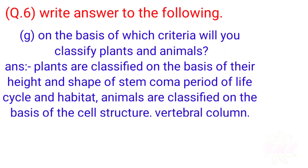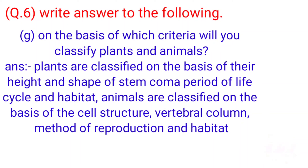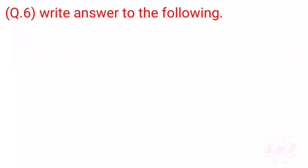G: On the basis of which criteria will you classify plants and animals? Answer: Plants are classified on the basis of their height, shape of stems, period of life cycle, and habitat. Animals are classified on the basis of cell structure, vertebral column, methods of reproduction, and habitat.